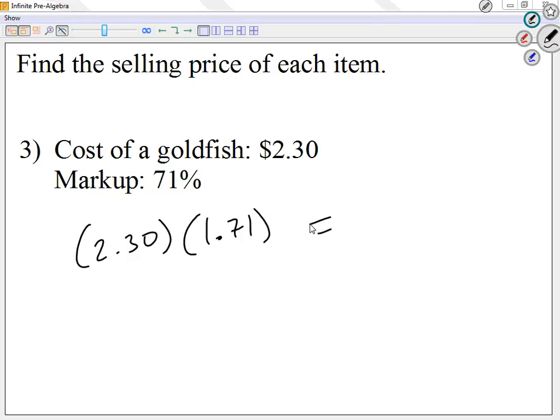Once again, round it to two decimal places, 3.93. As an idea, always check that your answer is bigger than the original price. Because you mark the price up. So the price should go up.